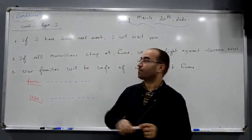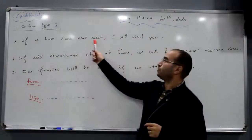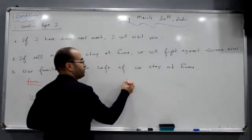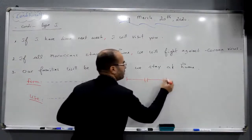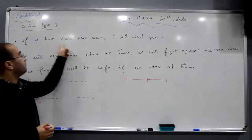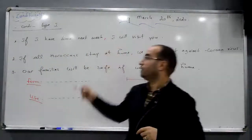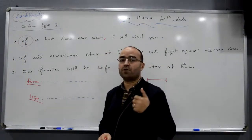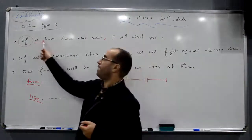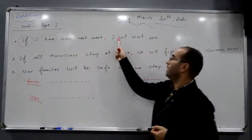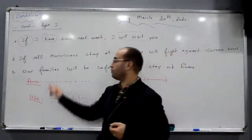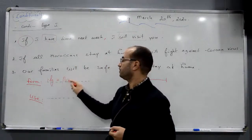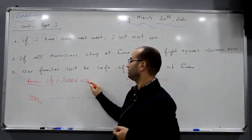For conditional type 1: 'If I have time next week, I will visit you.' We have two verbs or two phrases. If I have time next week, I will visit you. We start with 'if', of course, because it's conditional. All conditionals will have 'if'. We have 'if' or 'unless' — we'll see 'unless' after. So what is the form? The form: we start with 'if' plus the verb in the present simple.